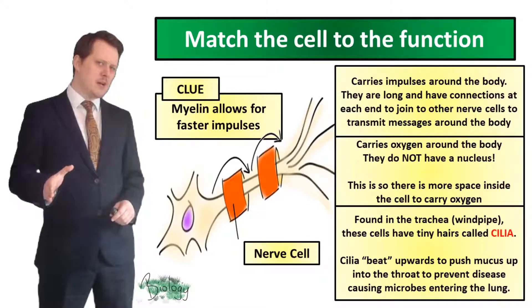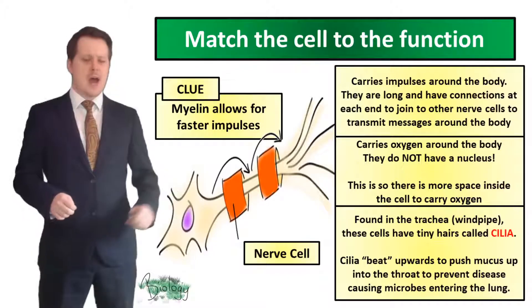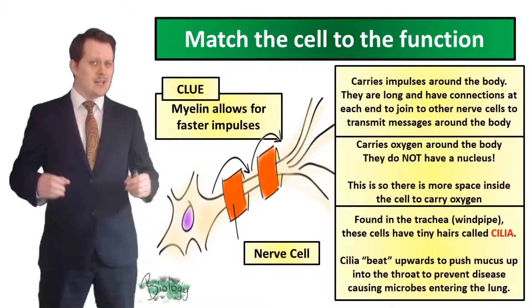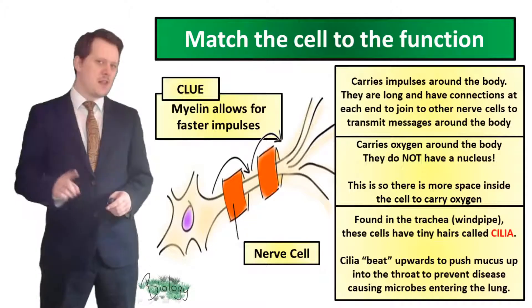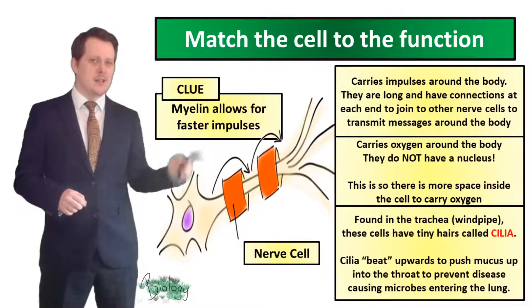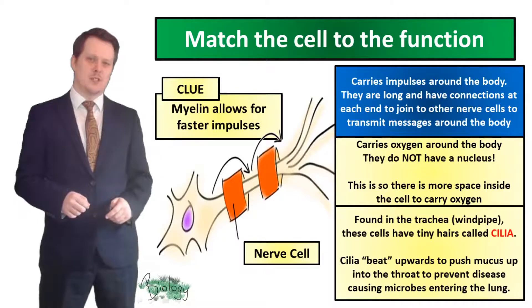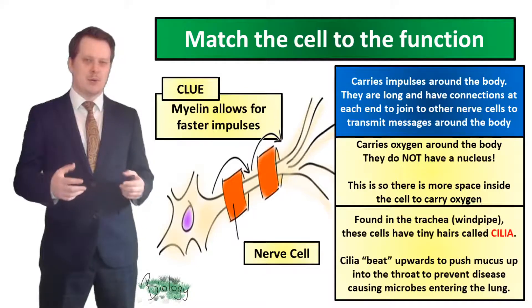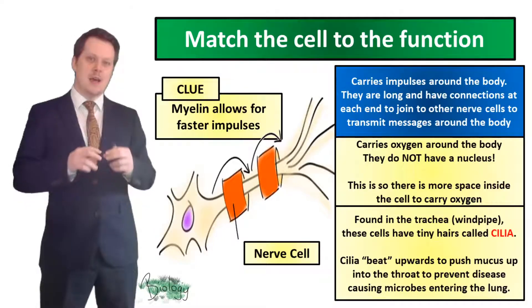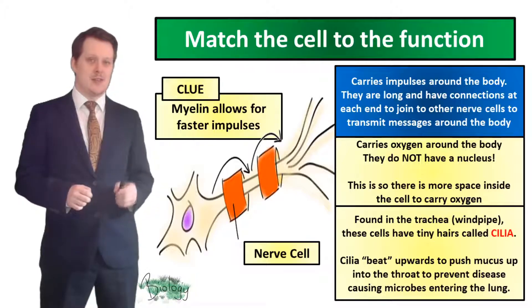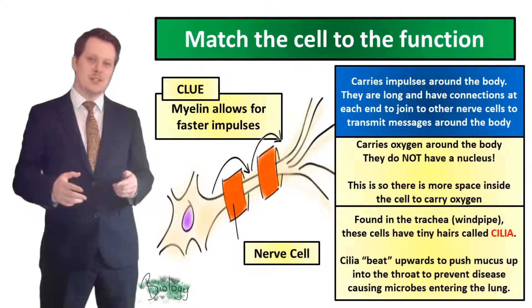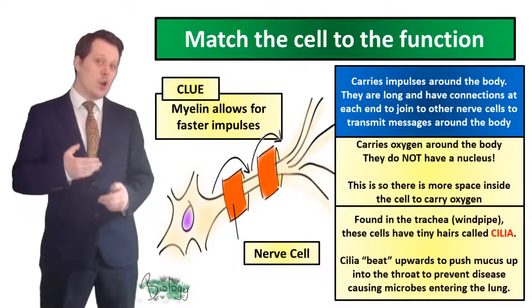The nerve cell is quite elongated, and our clue says it has myelin to allow for faster impulses. That helps us match this cell to its function — its task is to carry impulses around the body. Nerve cells are long and have connections at each end that join onto other nerve cells, allowing them to transmit messages over a long distance.